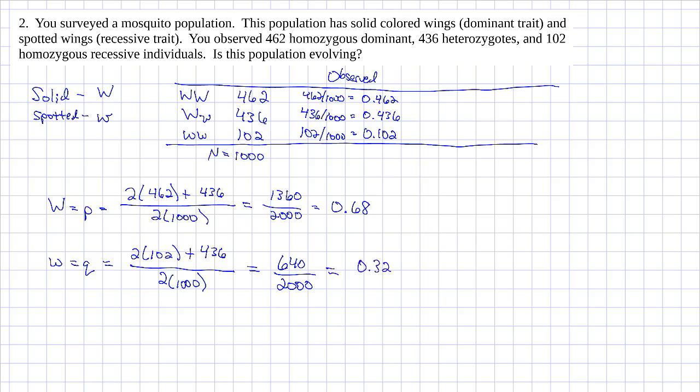Using these allele frequencies, I can then calculate our predicted frequencies. So p squared, this is our predicted frequency of the homozygous dominant. 0.68 squared, which is equal to 0.4624. And I'll place it up in my table.